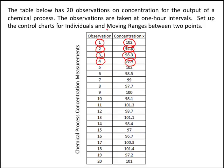The other chart is a moving range chart. We want some way to assess the variability in the process, and we're going to do this with a moving range between two consecutive points. We look at the first observation and the second observation, and we take the absolute value of the difference between these two points. The difference between 102 and 94.8 in absolute value is 7.2 — that's our first moving range value. The next is the absolute value of 94.8 minus 98.3, which is 3.5. The difference between 98.3 and 98.4 is 0.1. We'll have 19 moving ranges in total, and these are the values plotted on the moving range chart.